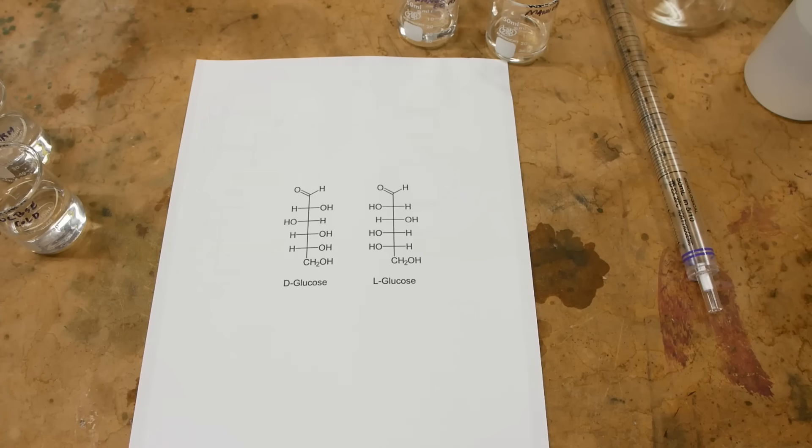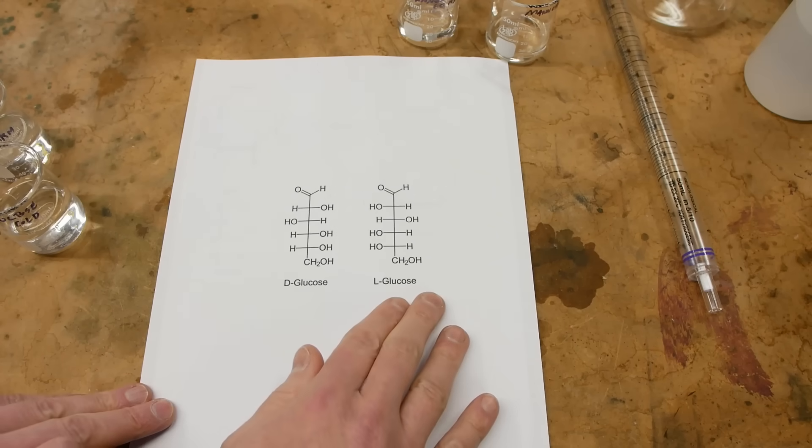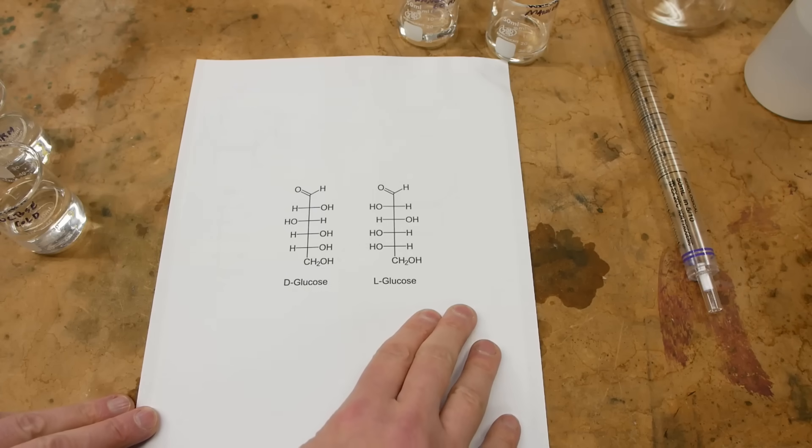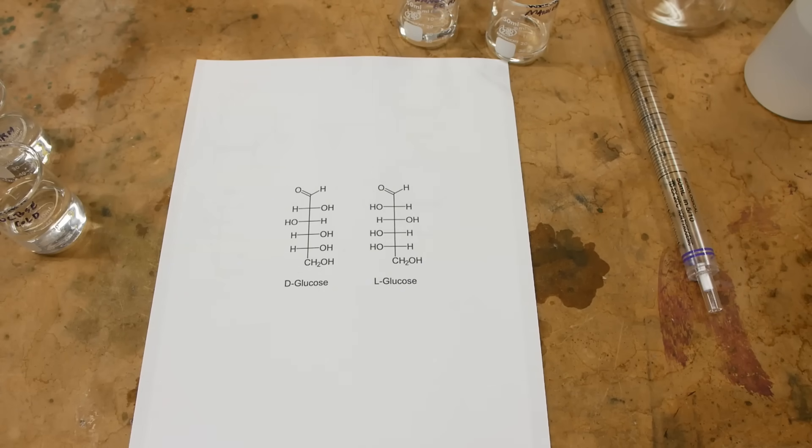This is interesting because these happen to taste exactly the same. If you synthesize some L-glucose in the lab, it tastes identical to D-glucose. But you're eating something from the mirror universe, and nature has never had a reason to process this, meaning there's no calories in L-glucose. You can eat all of this as much as you want, and you'll never gain a single calorie from it. So it's actually a very economically interesting thing to build.